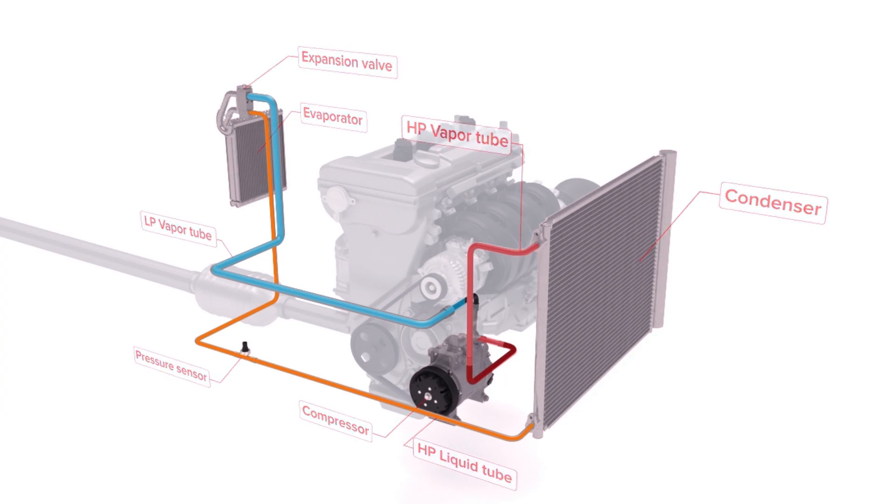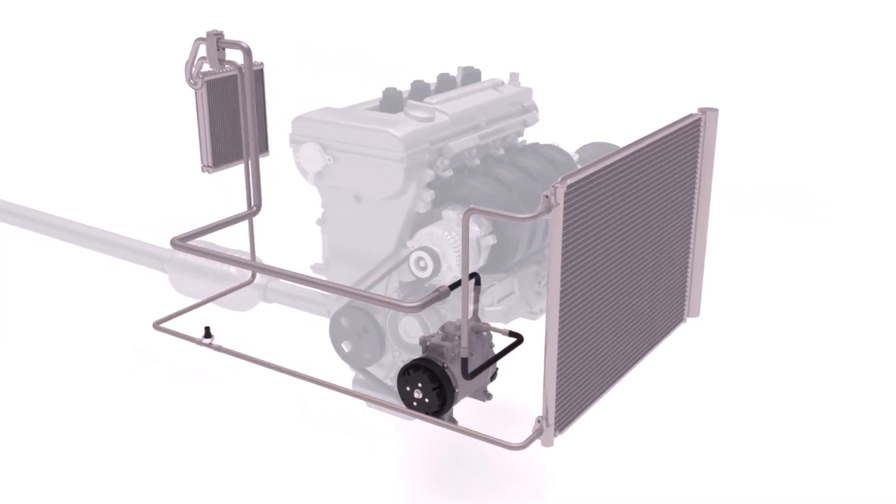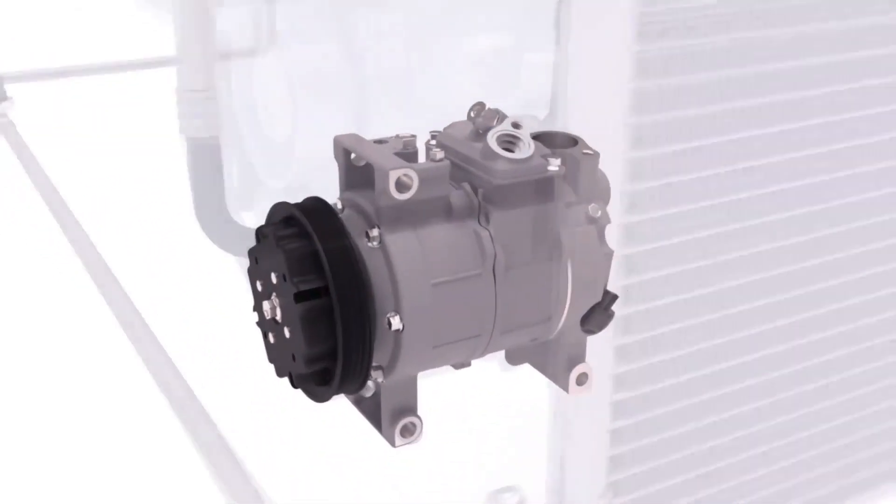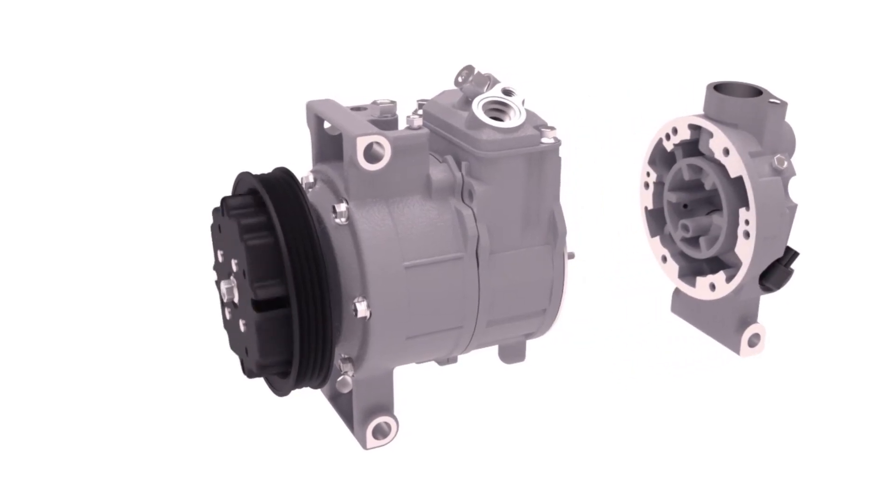We can now look at air conditioning operation in greater detail, starting with the compressor that creates the flow of refrigerant through the air conditioning system. The compressor is usually driven by the engine using a drive belt, with a magnetic clutch being used to engage and disengage the drive to the compressor.